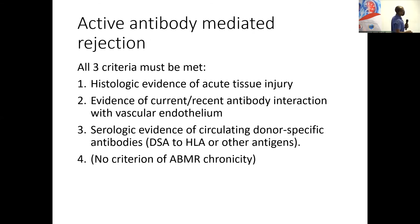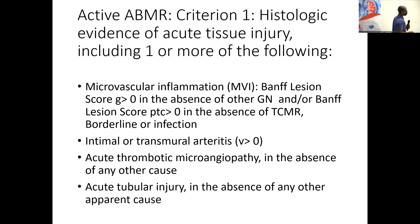How do we decide that a biopsy has active antibody-mediated rejection? You must have three criteria: evidence of acute tissue injury on the biopsy, evidence of current or recent antibody interaction with the vascular endothelium, and serologic evidence of circulating donor-specific antibodies. You also need to confirm there is no evidence of chronic tissue injury, because that would place it in a different category.